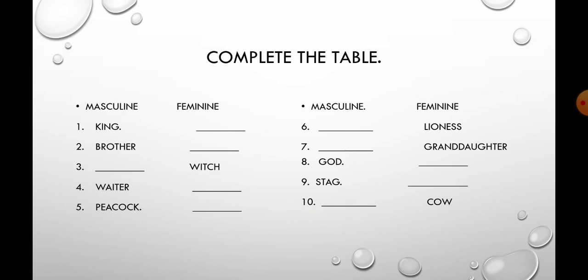Now children, you are going to find out the masculine and feminine gender for the given words. For example, king — king is masculine, so you have to write the feminine for king, that is queen. Lioness is a feminine gender, so you have to write the masculine gender for lioness, that is lion. You are going to complete this table accordingly.